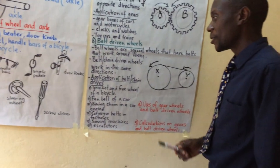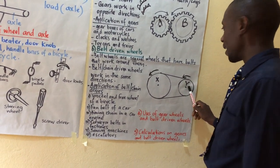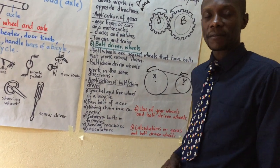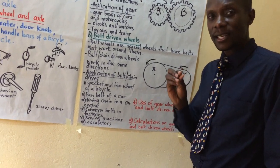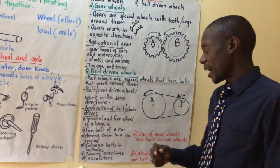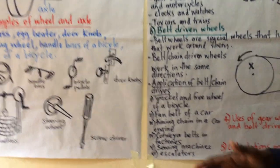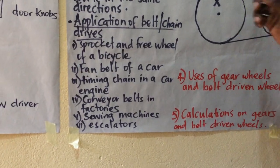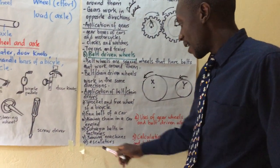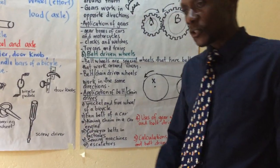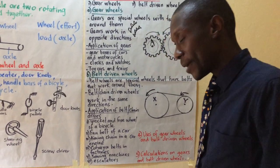Application of the belt driven wheels or chain drives: we have the sprocket and free wheel of a bicycle — the bigger wheel is the sprocket and the rear one is the free wheel. We have the fan belt of a car, which uses a belt around it. We have a timing chain in a car engine — there's a small chain called a timing chain, even in the engines of motorcycles, in the form of chain drives. We have conveyor belts in factories, a sewing machine — the table part has a large wheel and the sewing machine has a smaller wheel; the smaller wheel is the load while the effort is put on the table when you are pedaling. We also have escalators, where there are lots of belts underneath working to make sure people are moving up and down.